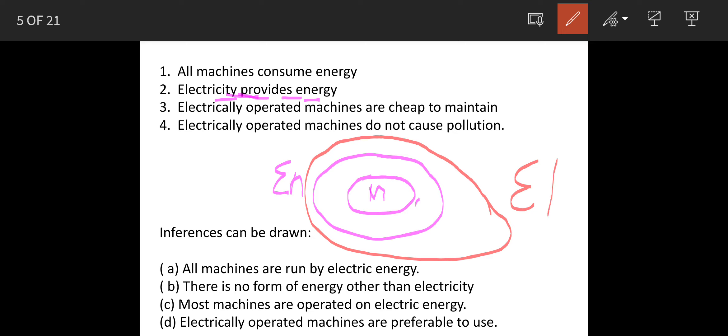Now the next statement, if you read, electrically operated machines are cheap to maintain. So this means what? This means electricity is not providing 100% energy, because otherwise all machines would have been cheap to maintain. So we will redraw this circle.